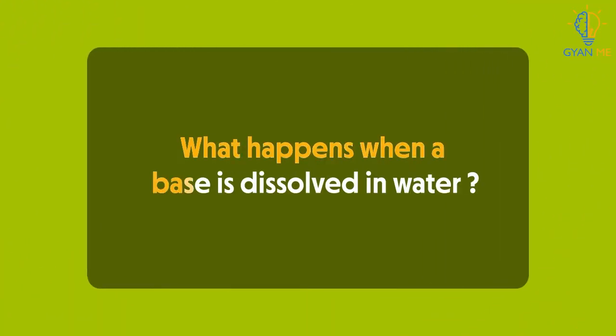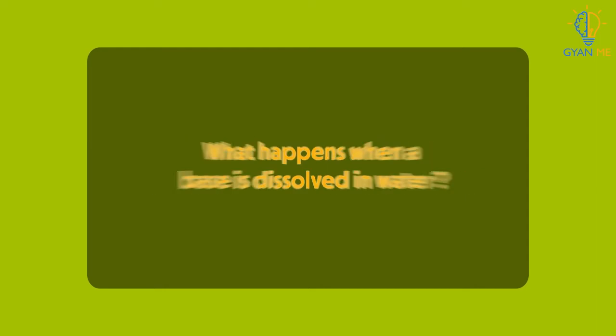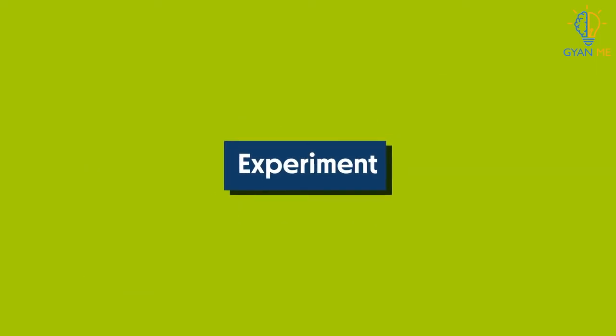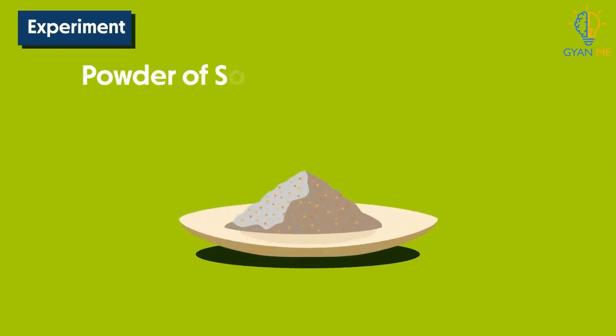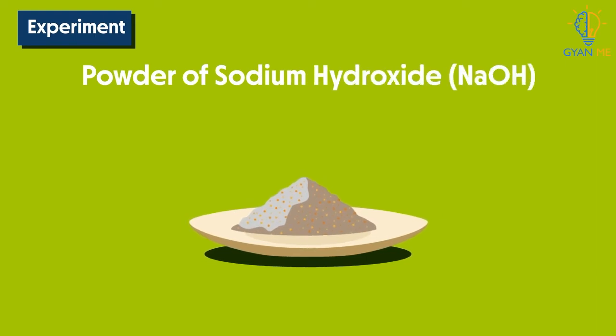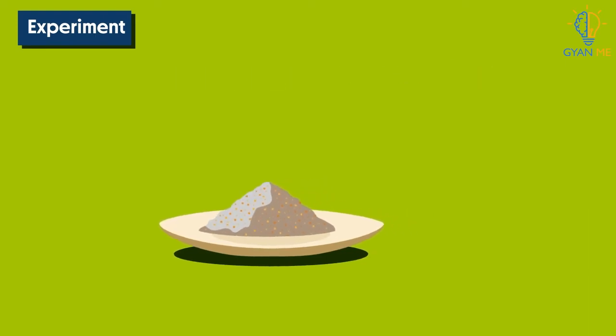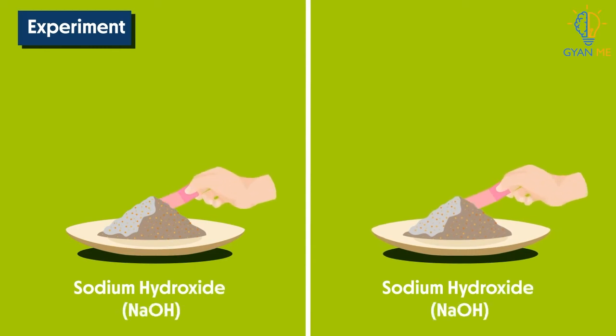Now let us see what happens when a base is dissolved in water. Similar experiments can be conducted with bases also. For example, take powder of sodium hydroxide and test it with dry litmus paper. Again, take wet litmus paper and test it. We find same results as in the case of acids. We find that the color of wet litmus paper will change but not dry litmus paper.